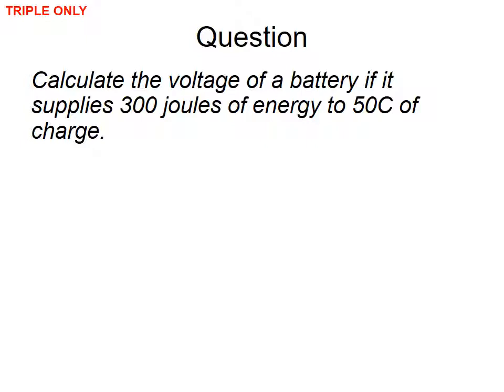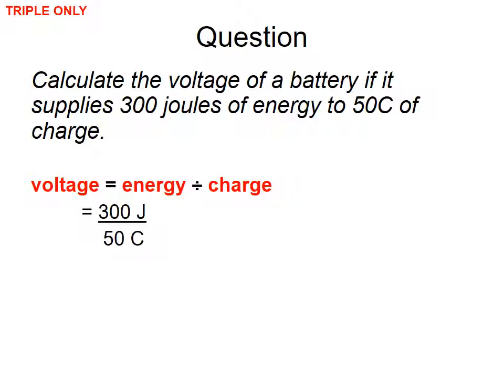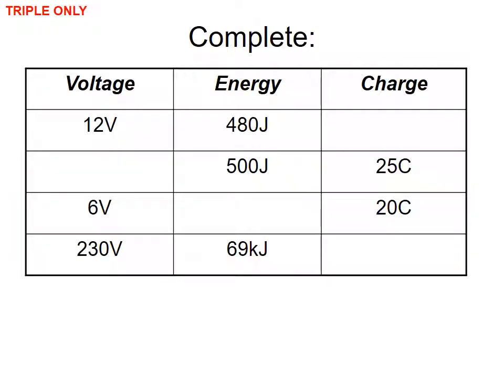Question: calculate the voltage of a battery if it supplies 300 joules of energy to 50 coulombs of charge. Pause the video. Voltage equals energy divided by charge: 300 divided by 50 gives a battery voltage of 6 volts.